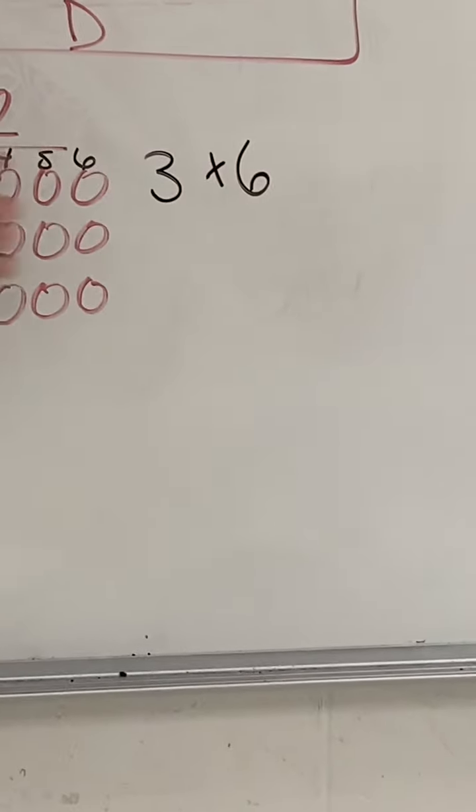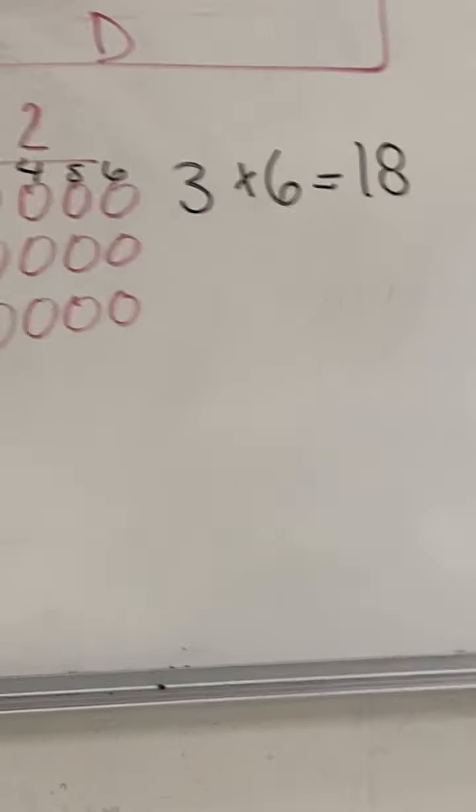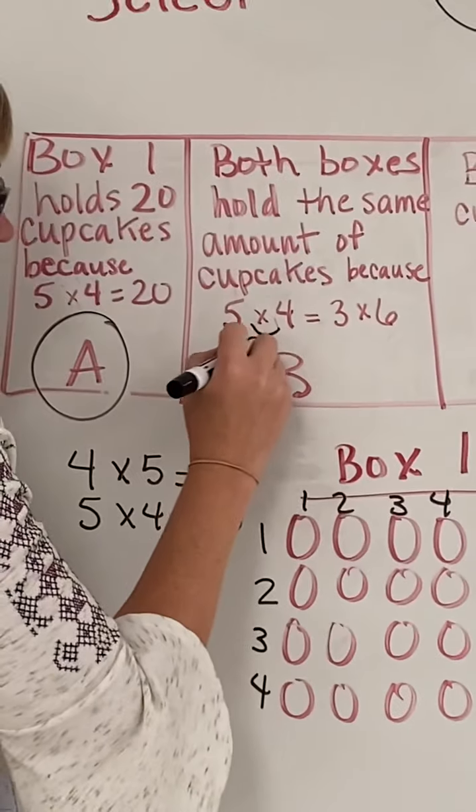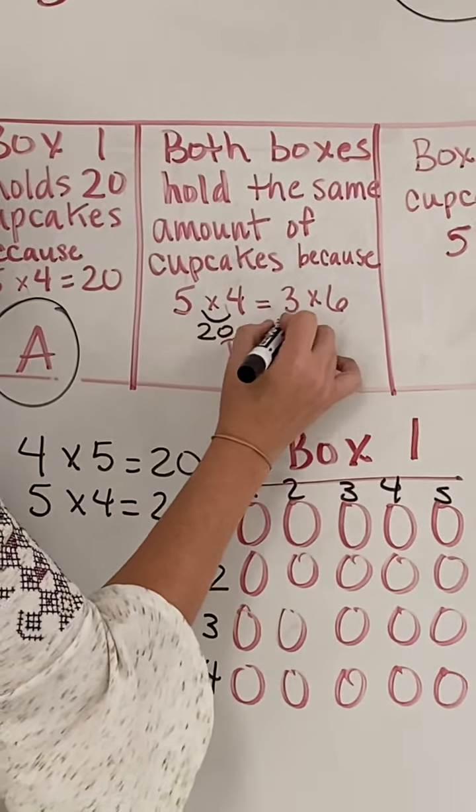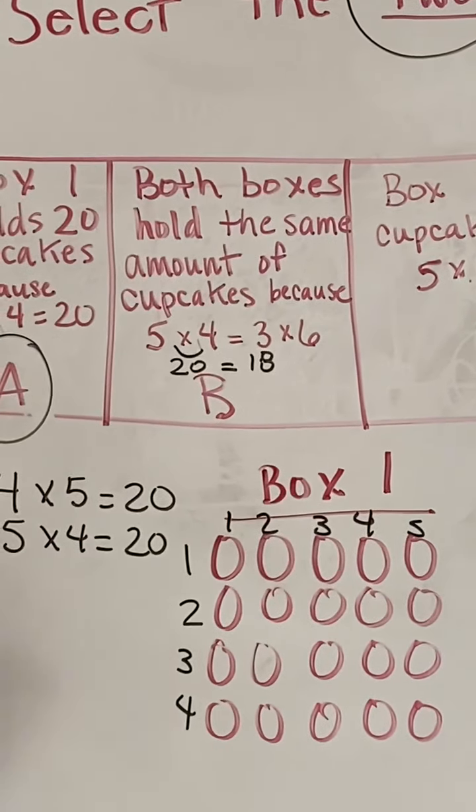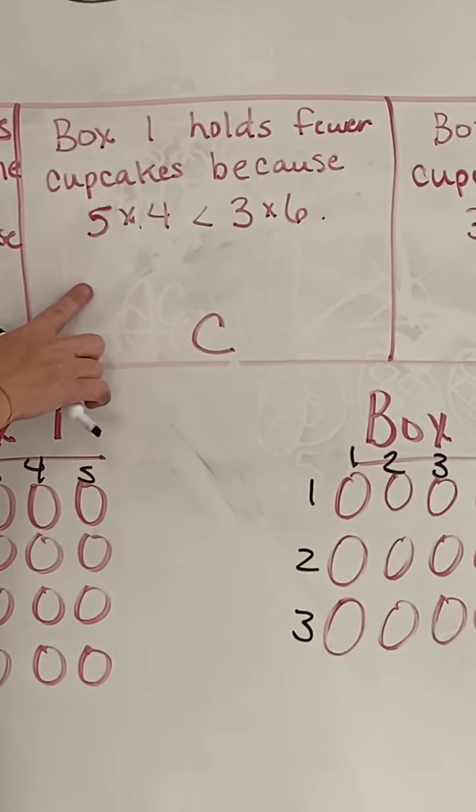So we've got 3×6 equals 18. So if we wanted to see if these equal, we could plug it in. 5×4 is 20, and 3×6 is 18. So does 20 equal 18? No. So we know that one is not true.